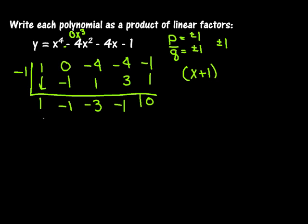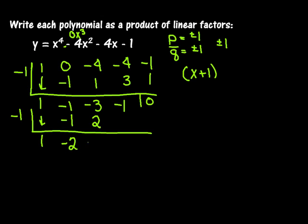So I know x plus one is one of my linear factors. Let's try negative one again and see what we get. I'm going to do synthetic division again, bring down my one. Negative one times one is negative one. Add down to get negative two. Negative one times negative two is two. Add down to get negative one. Negative one times negative one is one. And when I add down, I get zero again. So this is actually a double root, or a multiplicity of two.